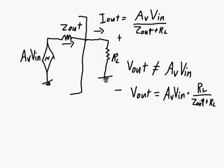So this expression here would just become a 1. So V out would be equal to AV times V in, but usually Z out is going to be some finite amount.